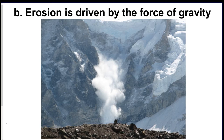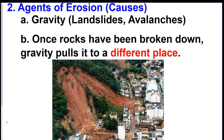An avalanche is when a lot of rocks, snow, and material falls because the sediment is all broken up and loose, so it gets pulled down a mountain from gravity. This is a way to move a lot of material in a short amount of time. Gravity is our first main cause, and you can get a landslide or an avalanche — essentially, it's taking sediment from one place and moving it to another.